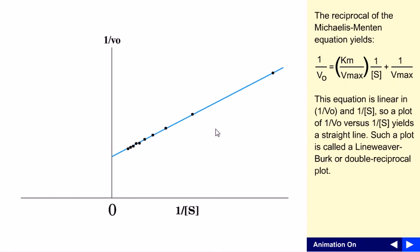The reciprocal of the Michaelis-Menten equation: normally, the Michaelis-Menten equation is V0 equals Vmax times S divided by Km plus S.